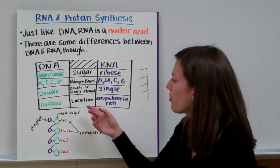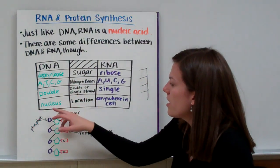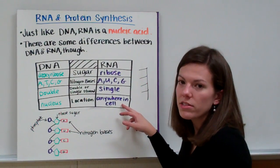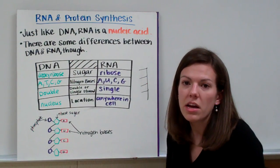DNA and RNA differ in their location in the cell. DNA is located in the nucleus of eukaryotic cells, while RNA is located anywhere inside of a cell. So it can be in the nucleus or outside in the cytoplasm.